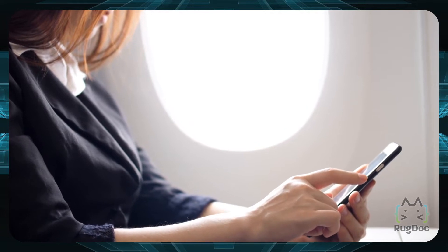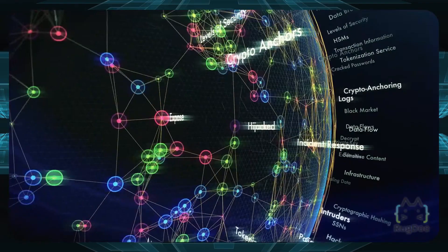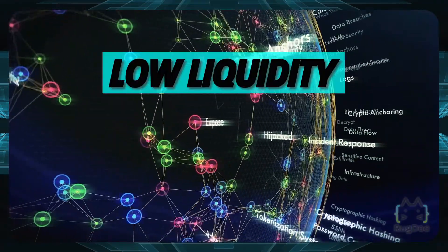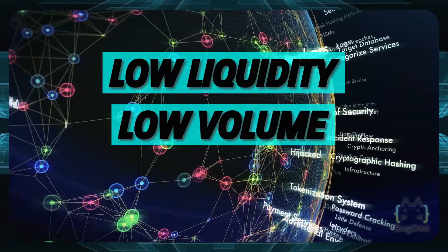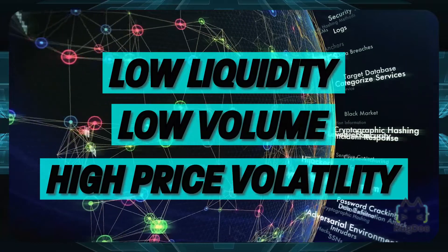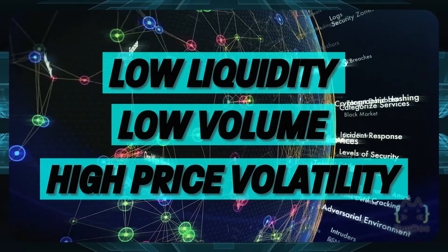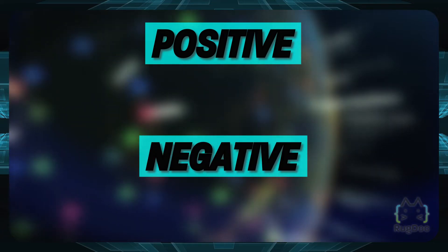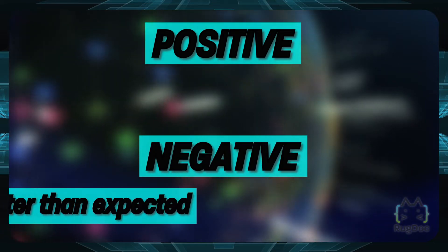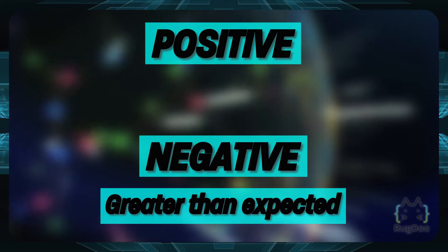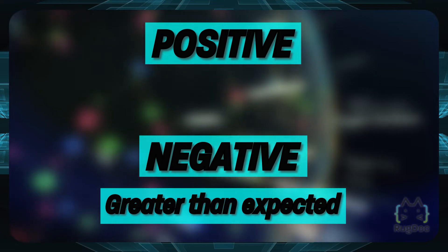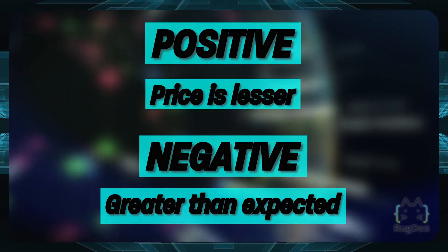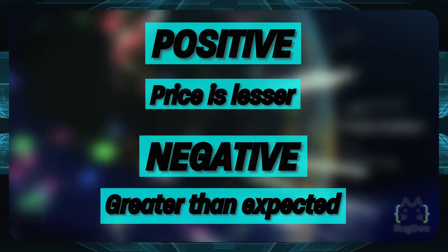Slippage can be caused by multiple factors, including low liquidity, low volume, and high price volatility, all of which are prevalent in cryptocurrency. Also, there can be both positive and negative slippage. Negative slippage occurs when the price is greater than expected, and positive slippage occurs when the price is less than originally selected.